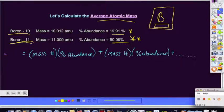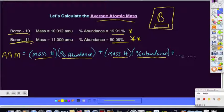So here's the formula. To calculate average atomic mass, we're going to take the mass number of one isotope and multiply it by its percent abundance. And then take the mass number of the second isotope, multiply it by that isotope's percent abundance, and we will continue that process for every isotope that there is for that element.